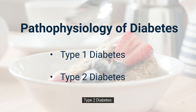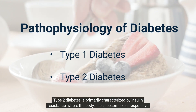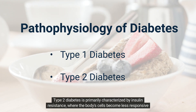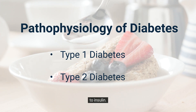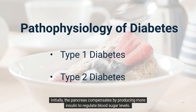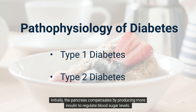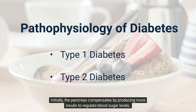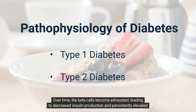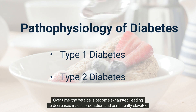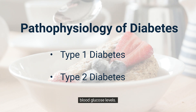Type 2 Diabetes: Type 2 diabetes is primarily characterized by insulin resistance, where the body's cells become less responsive to insulin. Initially, the pancreas compensates by producing more insulin to regulate blood sugar levels. Over time, the beta cells become exhausted, leading to decreased insulin production and persistently elevated blood glucose levels.